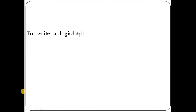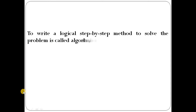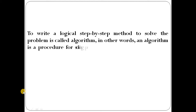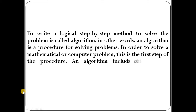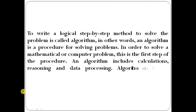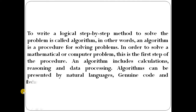What is an algorithm? To write a logical step-by-step method to solve a problem is called an algorithm. In other words, an algorithm is a procedure for solving a problem in order to solve a mathematical or computer problem. An algorithm includes calculation, reasoning, and data processing. Algorithms can be presented by natural languages, pseudocode, and flowcharts.